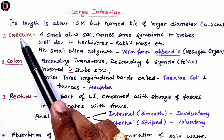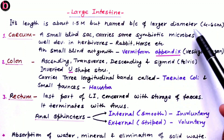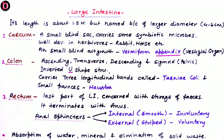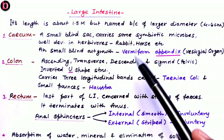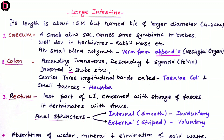The large intestine is 1.5 meters long and is named 'large' because of its diameter of 4 to 6 cm, which is comparatively more than that of the small intestine. It has three parts: cecum, colon, and rectum. The cecum is a small blind sac carrying symbiotic microbes; it is highly developed in herbivore animals such as cattle, cow, rabbit, horse, and goat, while in humans it is very less functional. From the cecum there is a small blind outgrowth, the vermiform appendix, which is vestigial in humans. Both cecum and appendix are highly functional in herbivore animals but very less functional in humans.